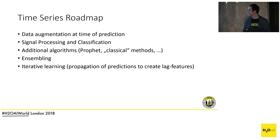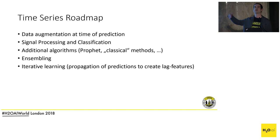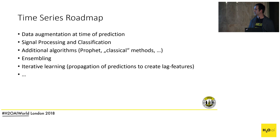Finally, iterative learning is another roadmap item — another way to deal with long forecast horizons where you can't create short lags. Instead of training one holistic model, you train iterative models that predict only one time step ahead, then use those predictions as lagged inputs to enhance predictions at the next point in time. We're always listening to customer feedback to figure out what's actually needed.